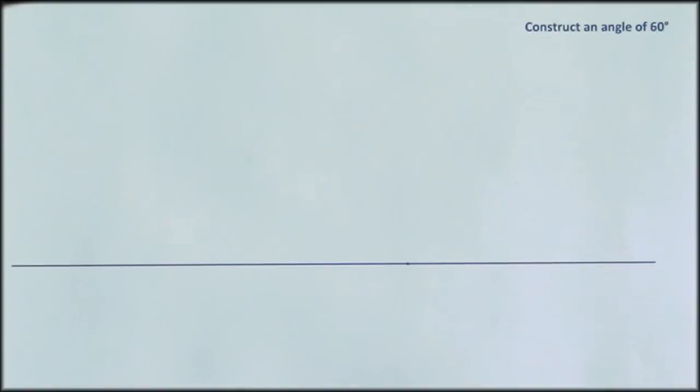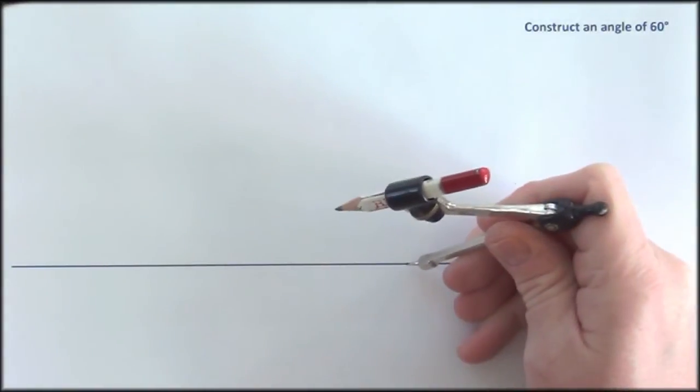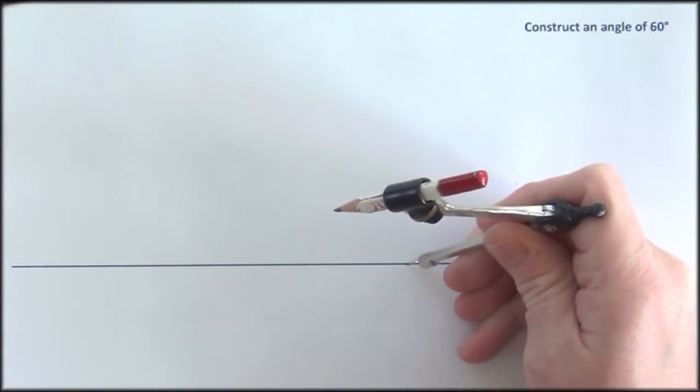What this effectively means is you're going to use the fact that the interior angles of an equilateral triangle are all 60 degrees to construct the angle. So all I need to do is to have my compass set to some sensible size and we're going to work like this.